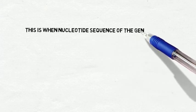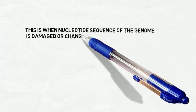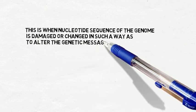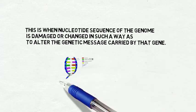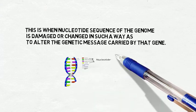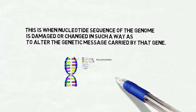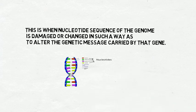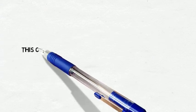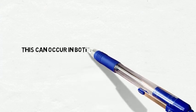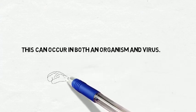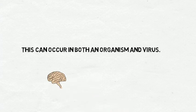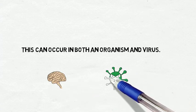This is when the nucleotide sequence of the genome is damaged or changed in such a way as to alter the genetic message carried by that gene. This can occur in both an organism — which you see here on the left, a brain of a human body — and a virus, which you see in color green.